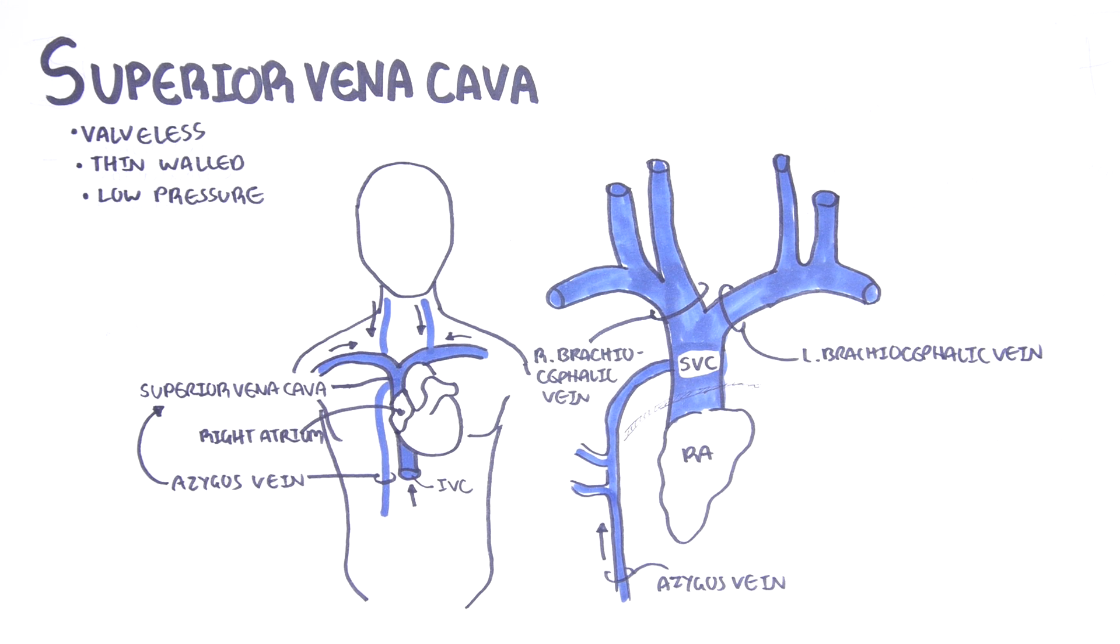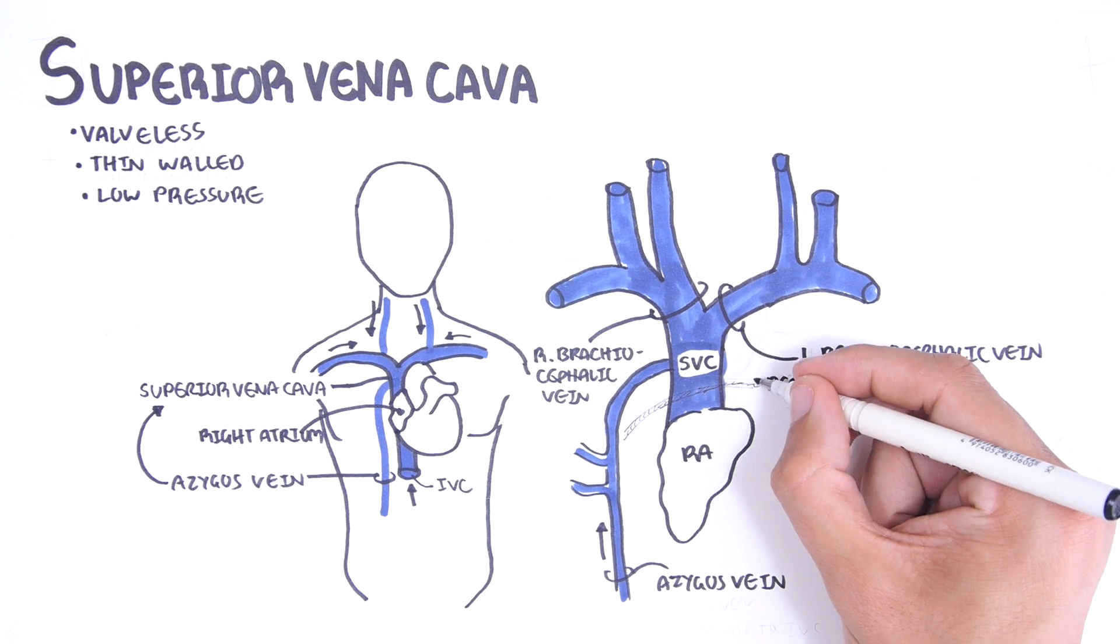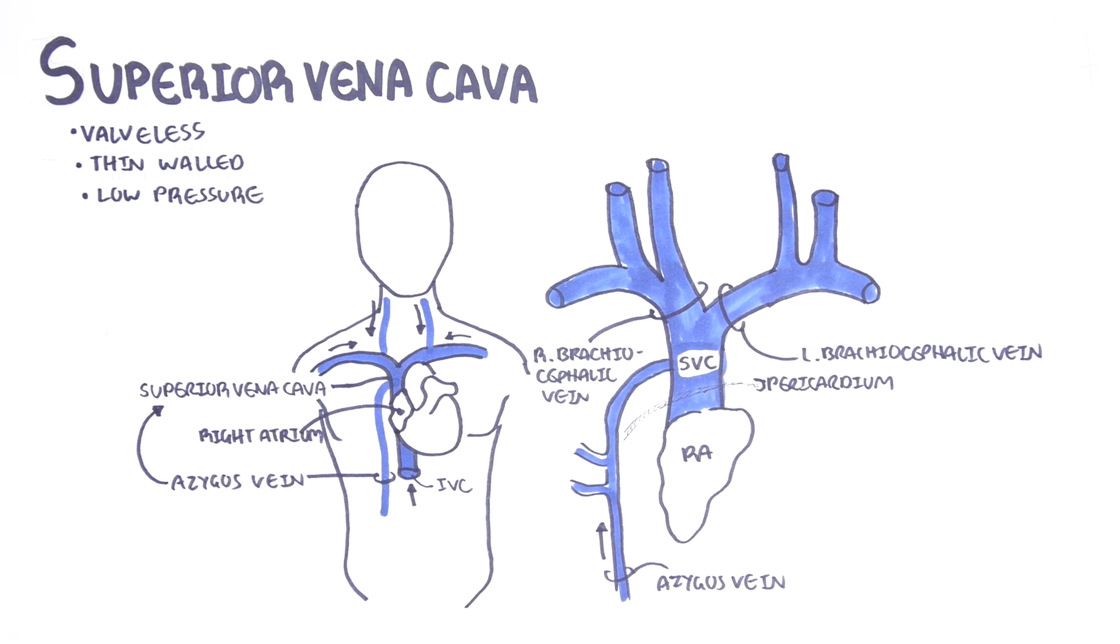The third tributary of the superior vena cava is the mediastinal and pericardial veins. The superior vena cava passes through the pericardium as it enters the right atrium.